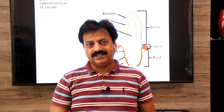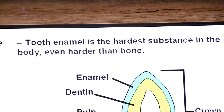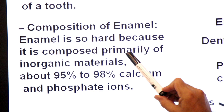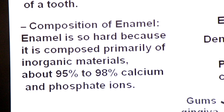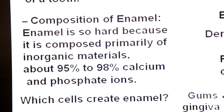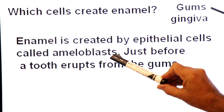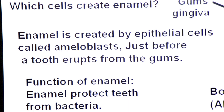Enamel is the hardest substance in the body — even harder than bone. The tooth enamel is composed primarily of inorganic materials, about 95% to 98% calcium and phosphate ions, making it highly calcified and hard in nature. Enamel is created by epithelial cells called ameloblasts, just before the tooth erupts from the gums.